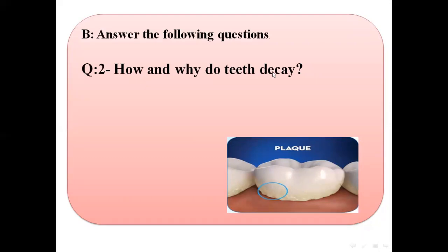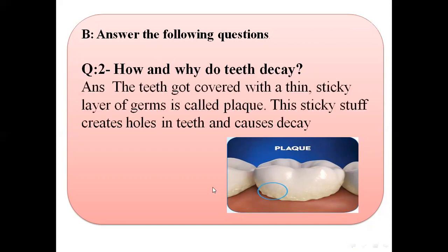Question two: how and why do teeth decay? Decay is a process when your teeth start rotting. The answer is: the teeth get coated with a thin sticky layer of germs. This thin sticky layer of germs is called plaque, and this sticky stuff creates holes in the teeth and causes decay.